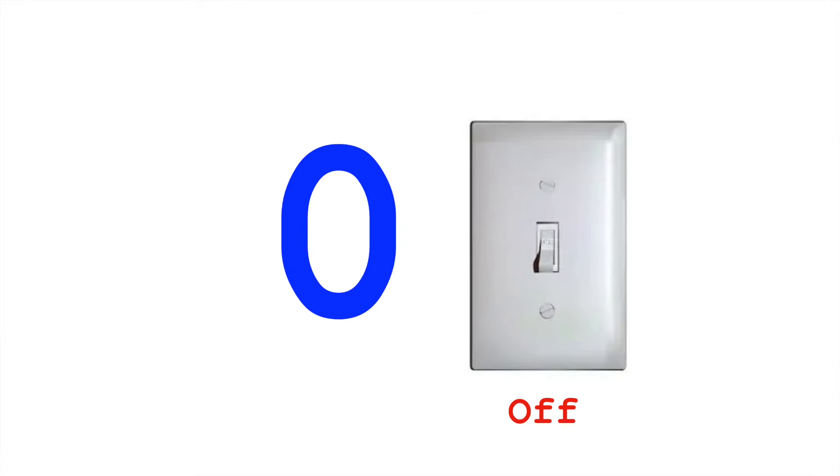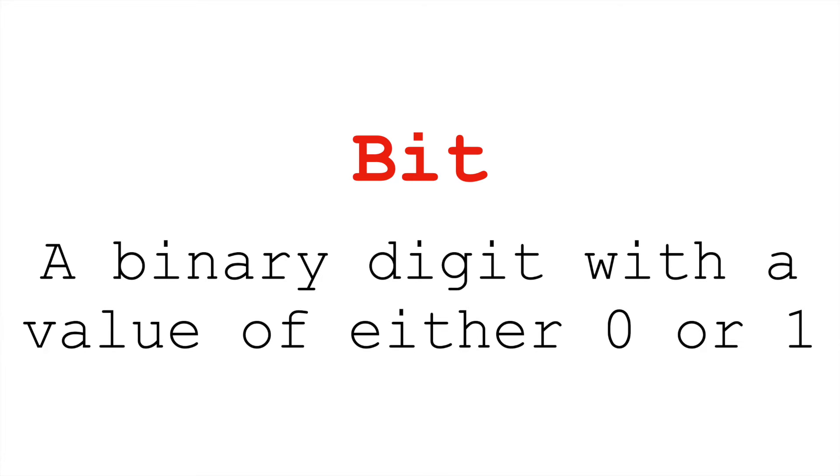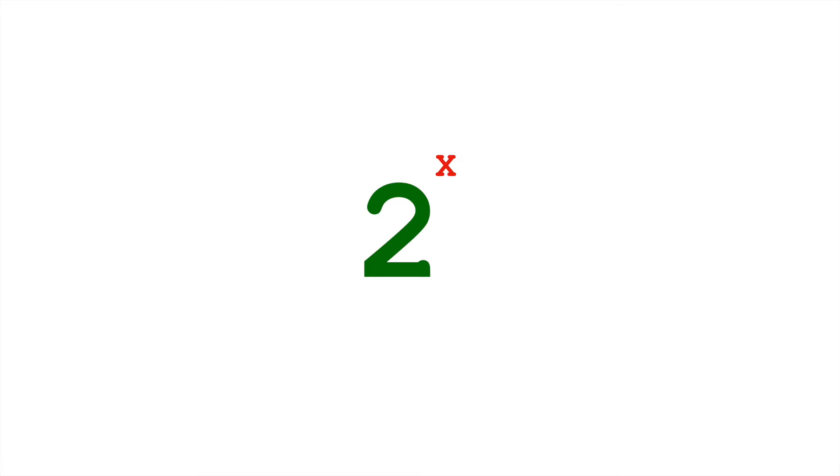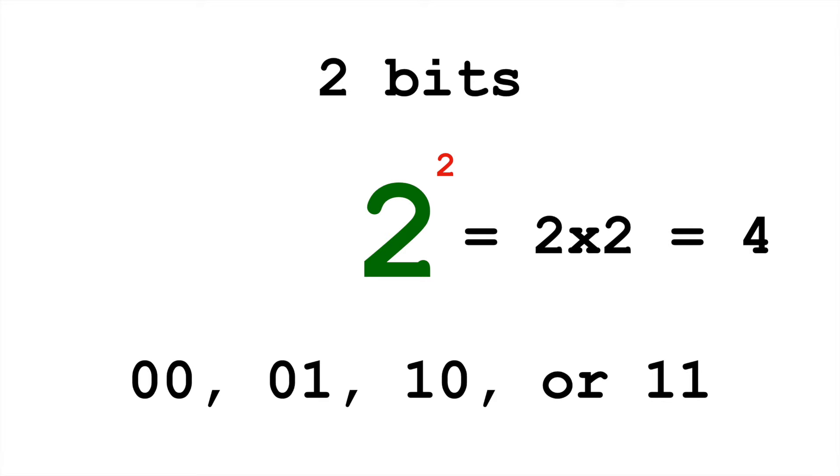Bits can either be a zero or a one. Since each bit only has two possible values, the number of different values a binary number can store is equal to two to the power of x, where x is the number of bits. One bit, two to the first power, two: zero or one. Two bits, two to the second power, two times two is four. So we can do zero zero, zero one, one zero, one one.